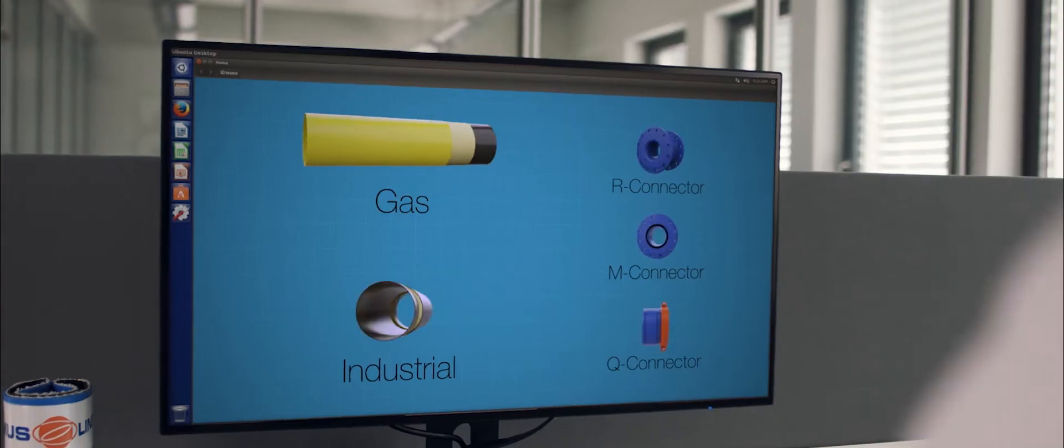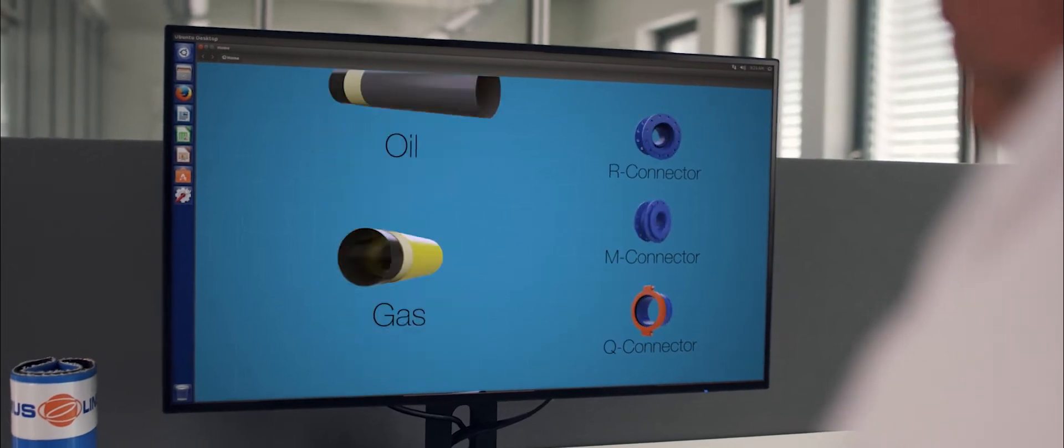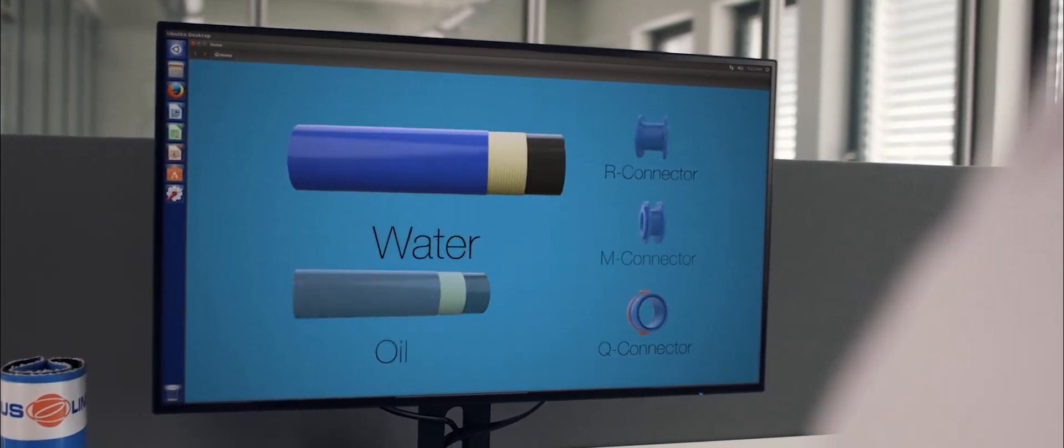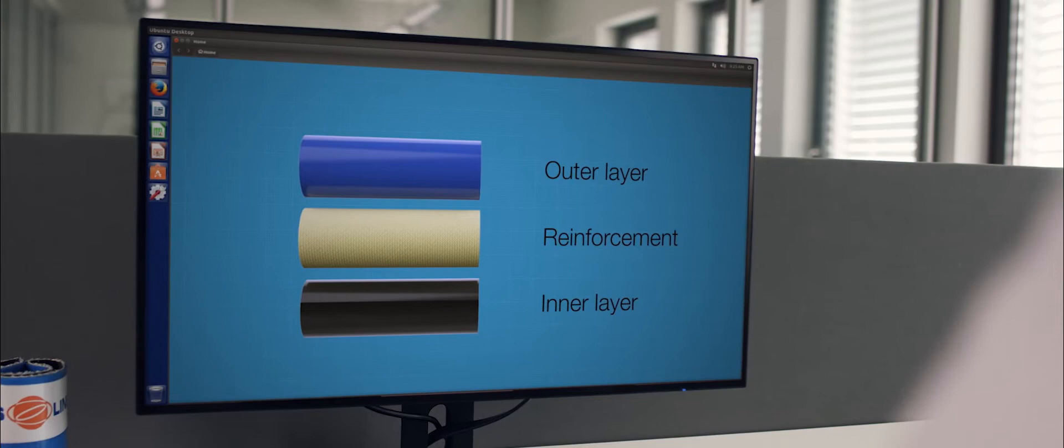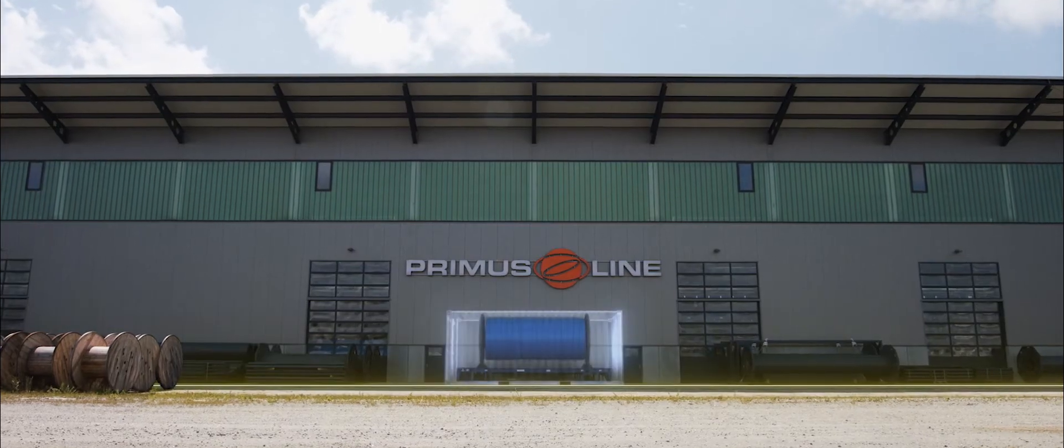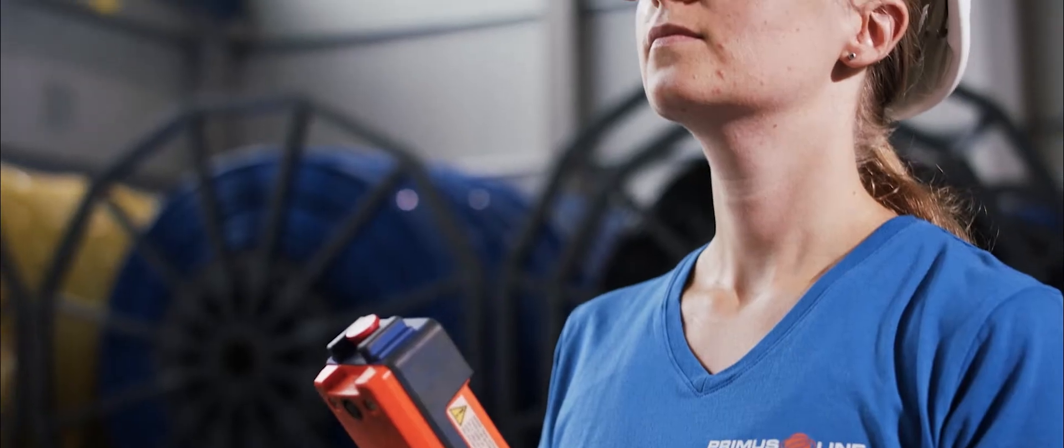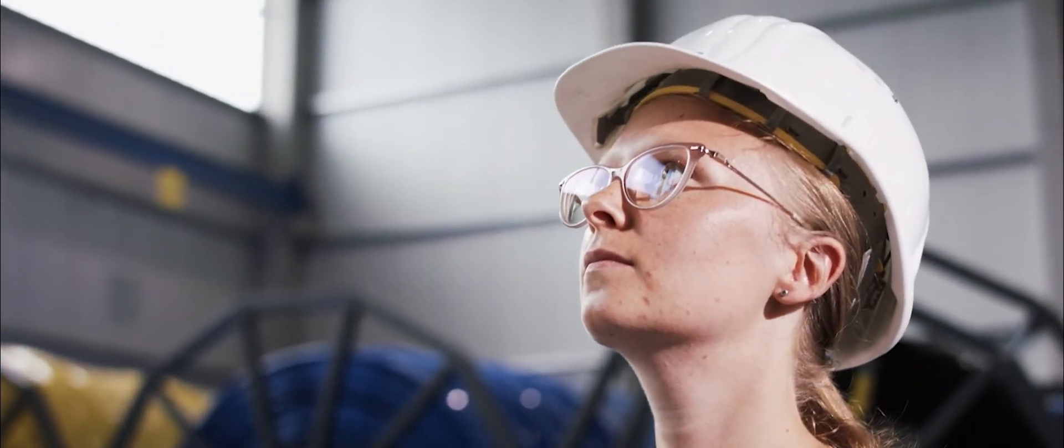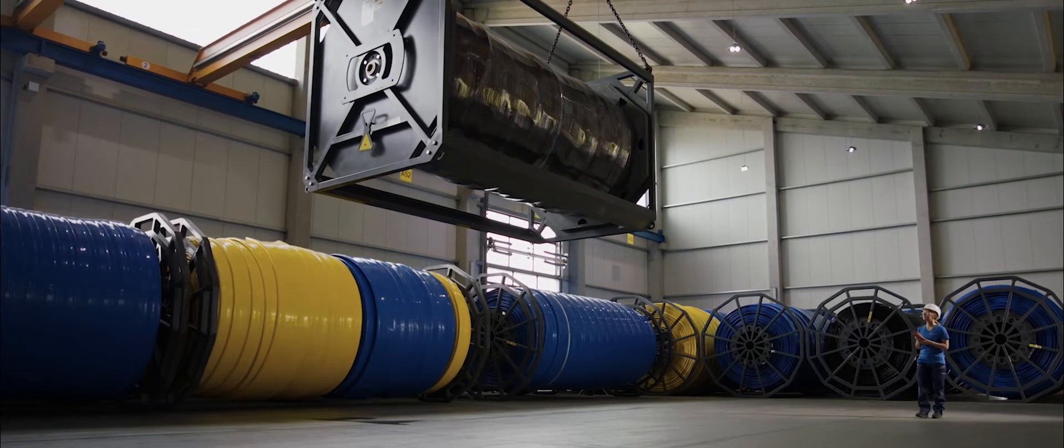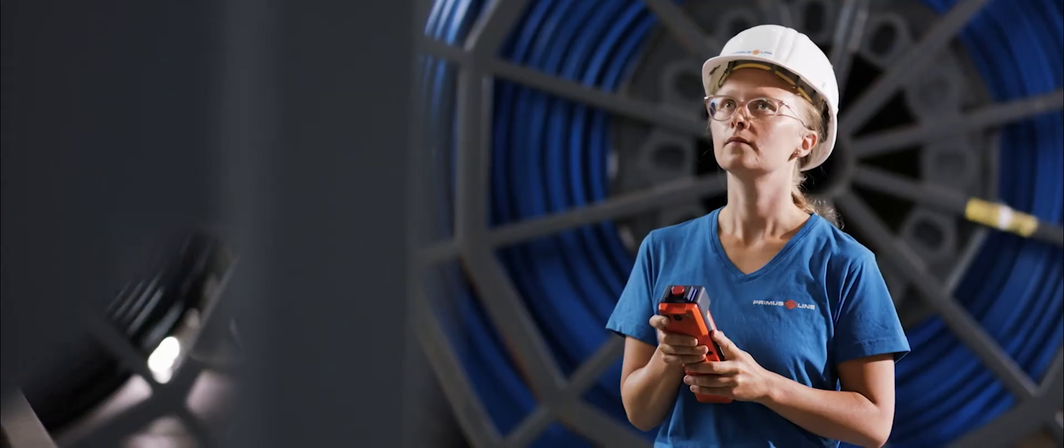We join up the threads that enable trenchless rehabilitation of pressure pipelines. Our Primus Line system has been developed and is produced in Germany. Its special technology combines precisely these qualities for stable connections from Bavaria in Germany to the rest of the world.